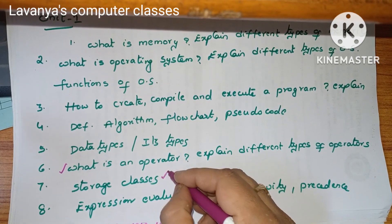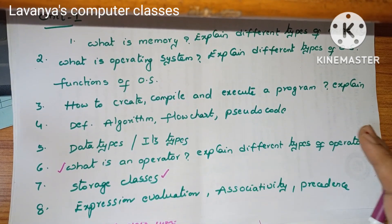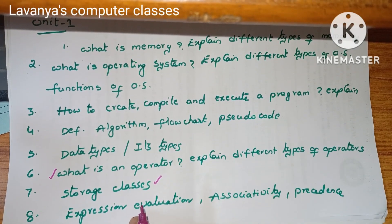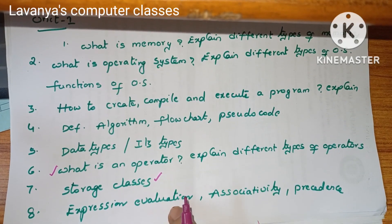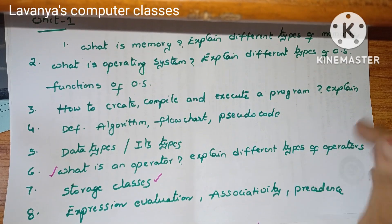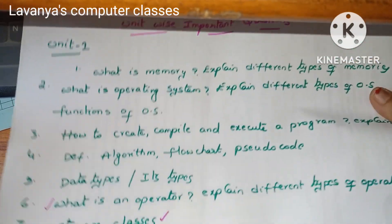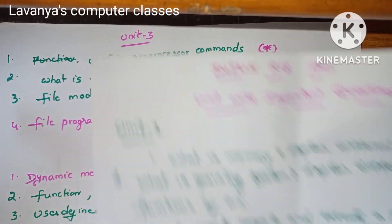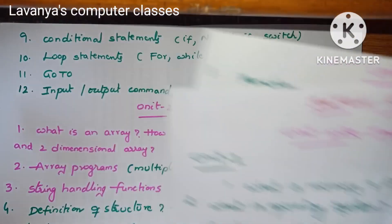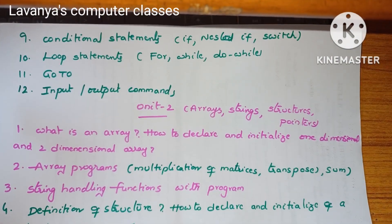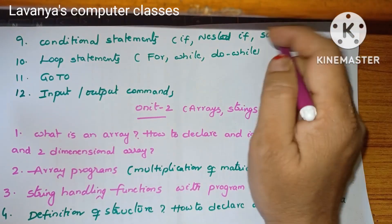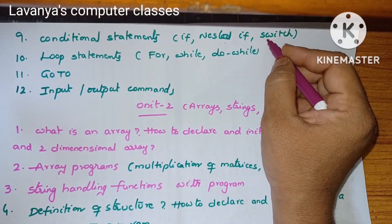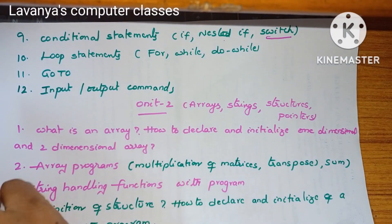A very very important question is storage classes. What is a storage class? Explain different types of storage classes. Then concentrate on expression evaluation — what is associativity and what is precedence. Next, important questions in unit 1 are conditional statements: if statement, nested if statement, and switch, which is also a multi-conditional statement.